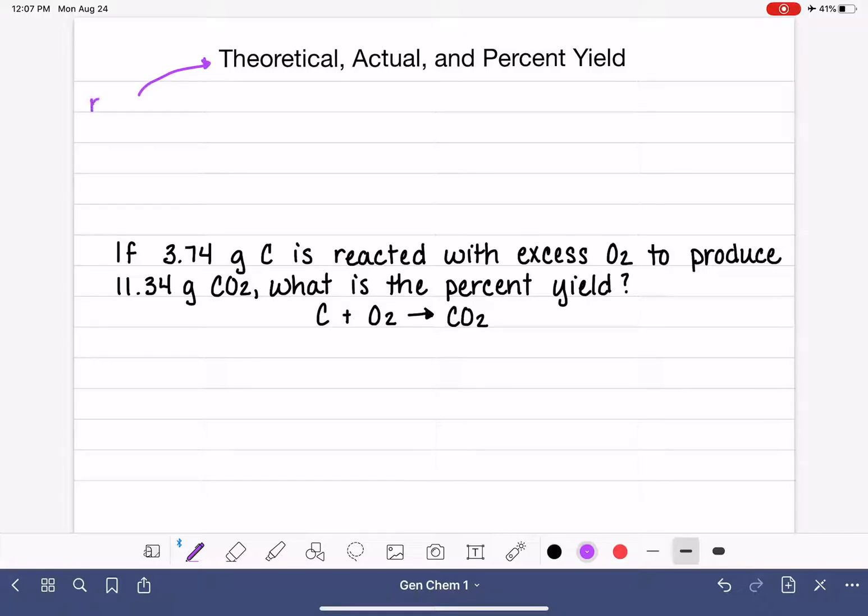The theoretical yield is the maximum amount of product that could be made if everything went perfectly.